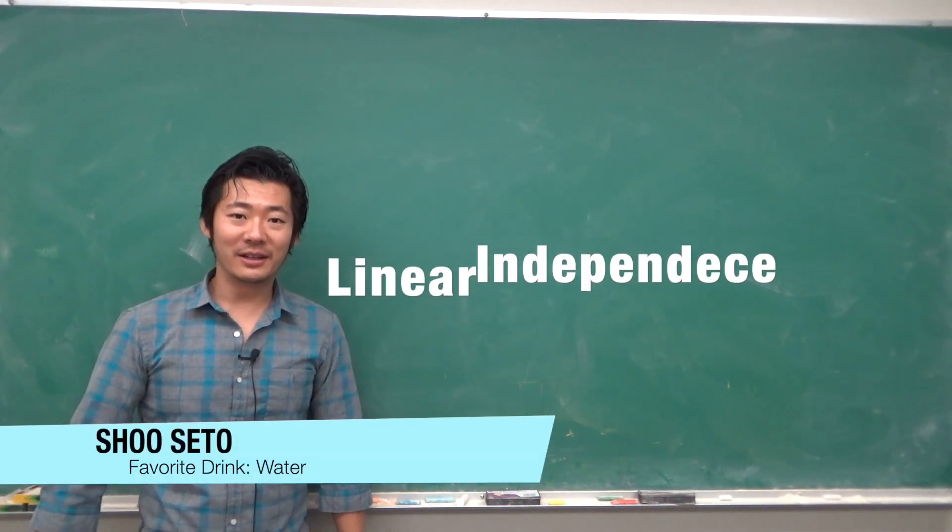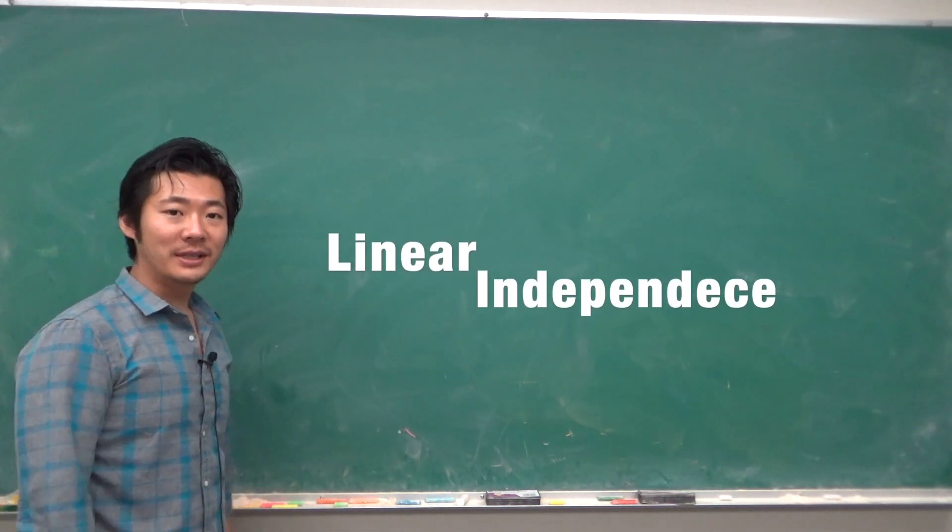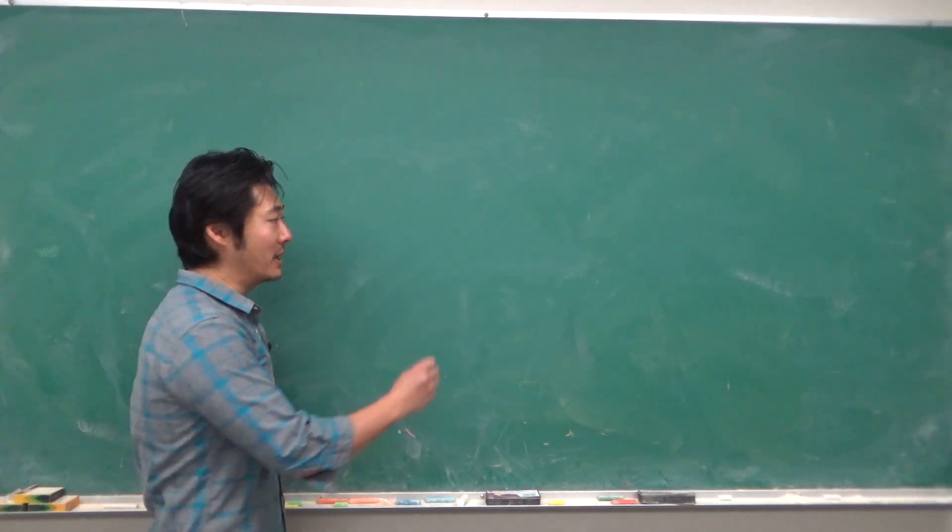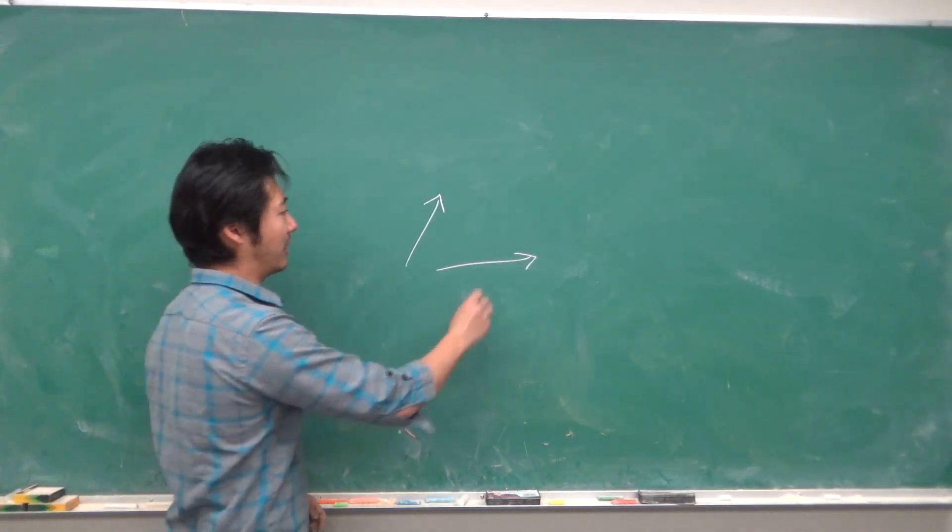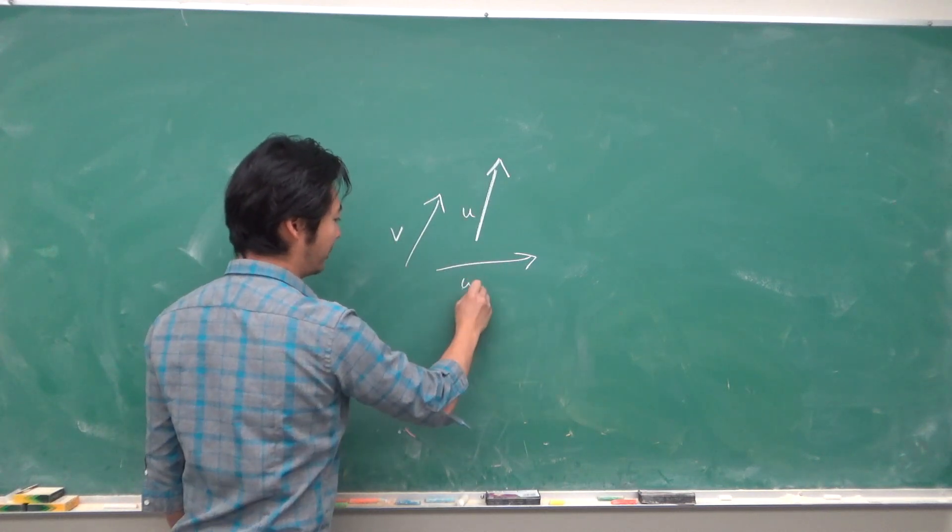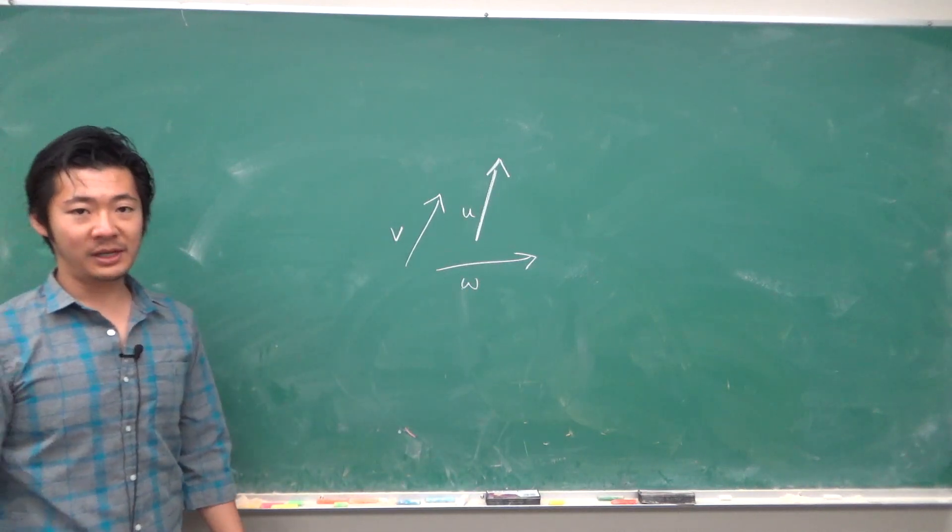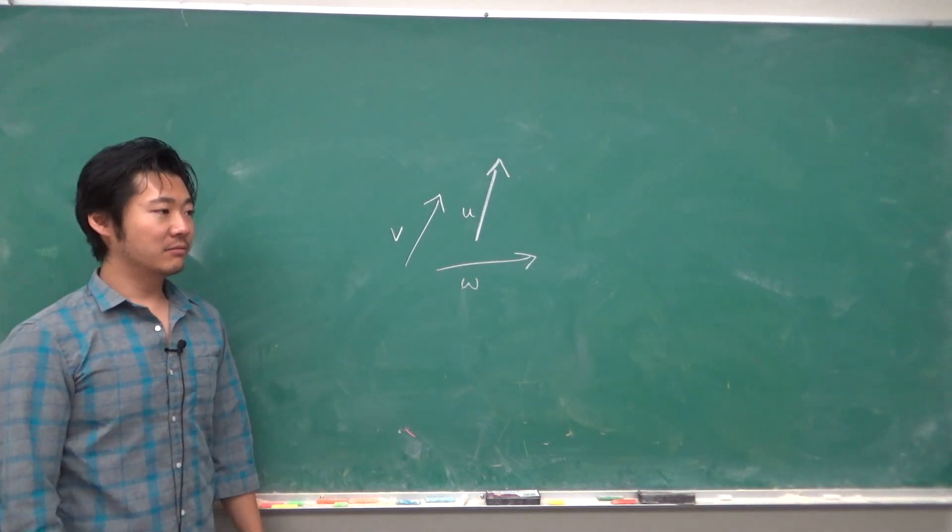Hello everyone, in this video I'll talk about linear independence. We say two vectors are linearly independent if they are not parallel. What about three vectors, let's say V, U, and W? What do we mean by whether they are or are not linearly independent?